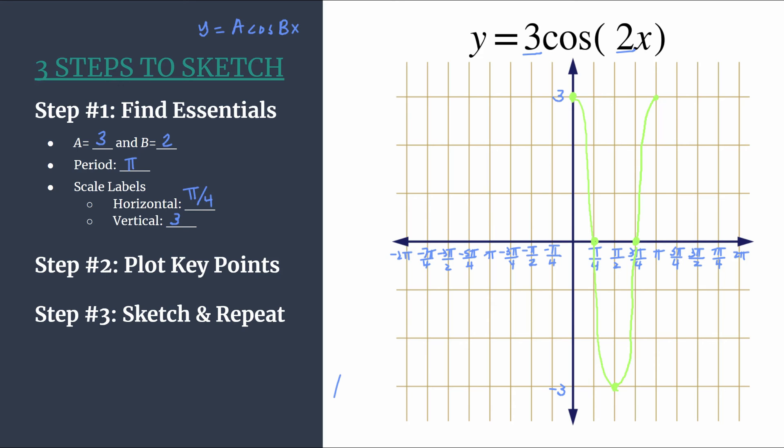So we have one cycle of 3 cosine 2x. And now we can simply repeat the pattern to get as many cycles as we'd like. So I'll show the repeats in purple. Let's continue on in the positive direction. So we already plotted that first maximum, so max, zero, minimum, zero, and then we're out of space but we would have another maximum at 2 pi. And we can sketch that in.